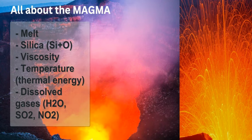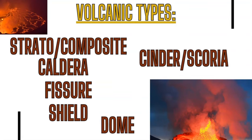More viscous magma turns into andesite, dacite, diorite, and granite-type igneous rocks, while runnier, less viscous magma consolidates into more basaltic igneous rock. The six main volcano types covered in this video are: strato or composite, caldera, fissure, shield, dome, and cinder — also called scoria. Three of these are very common: strato, shield, and cinder or scoria. The other three — caldera, fissure, and dome — are volcanoes but are not as common and are sometimes overlooked in volcanology. Each of these six types has very specific characteristics based on the magma creating them.